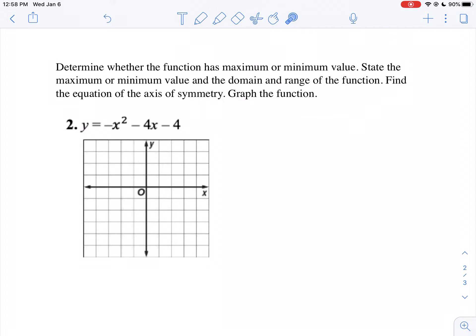Determine whether the function has a maximum or a minimum. Well, I notice it's a sad parabola, so we know it's going to be at its maximum. State the maximum or minimum value. So I'm going to do x equals negative b over 2a. Now in this case, a is negative 1, b is negative 4, and c is negative 4. So since b is negative 4, I'm going to say the opposite of negative 4 over 2 times negative 1. So I get positive 4 over negative 2, which is negative 2. That is the x-coordinate of your maximum.